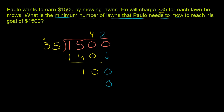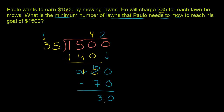2 times 5 is 10, carry the 1. 2 times 3 is 6, plus 1 is 7. So 35 times 2 is 70. Subtract: 0 minus 0 is 0. 0 minus 7 — you can't do it, so borrow 1 from the 1, which becomes 0, and this becomes 10. 10 minus 7 is 3. There's nothing left to bring down. So 35 goes into 1,500 42 times, with a remainder of 30.